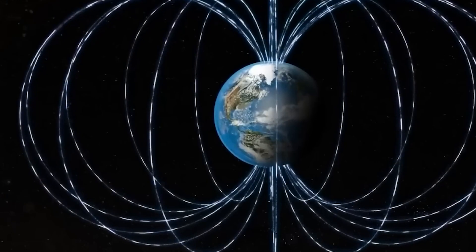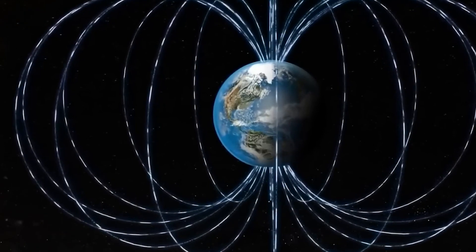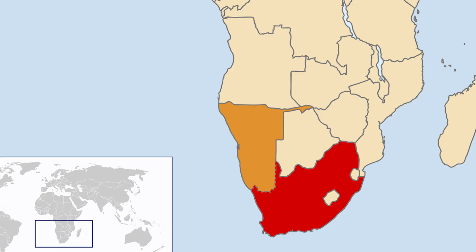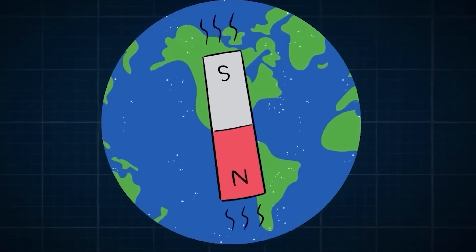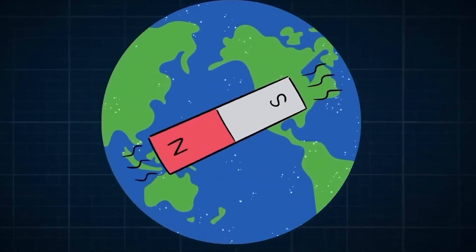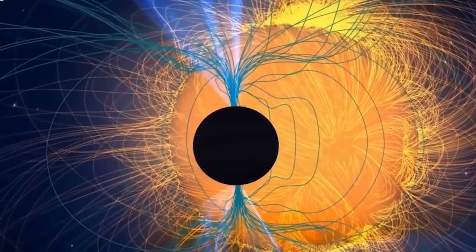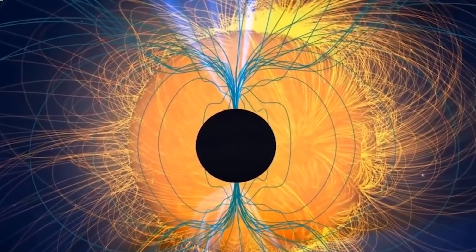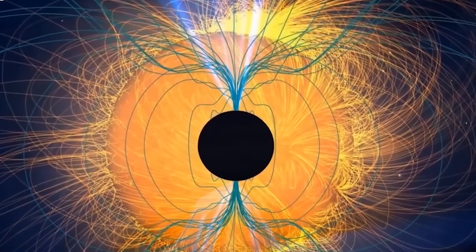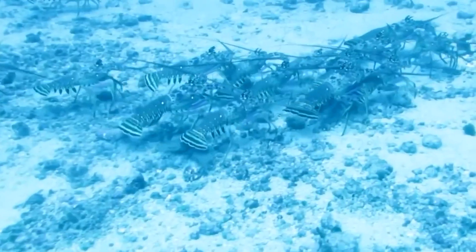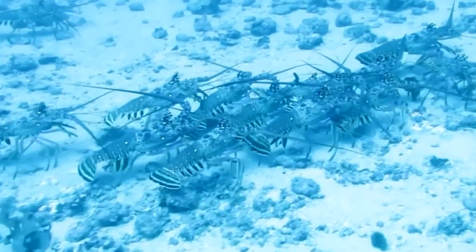Scientists have confirmed that lower magnetic intensity stretches between South America and Southwest Africa. This weird phenomenon has significantly transformed the Earth's magnetic field, leading to a growing and splitting dent. So what is this anomaly called? And what could be the reason behind its occurrence? Can this anomaly affect life on Earth? Stay tuned with us to get your queries answered.